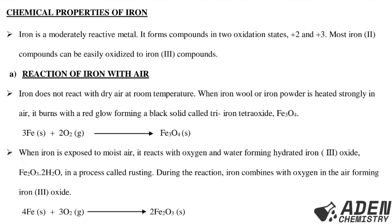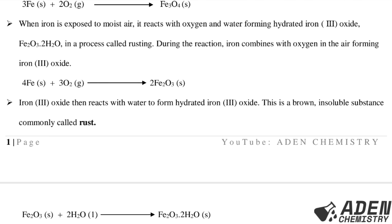When iron is exposed to moist air, it reacts with oxygen and water forming hydrated iron(III) oxide, Fe2O3·xH2O, in a process called rusting. Iron combines with oxygen forming iron(III) oxide: 4Fe(s) + 3O2(g) → 2Fe2O3(s). The iron(III) oxide then reacts with water to form hydrated iron(III) oxide. This is a brown insoluble substance commonly called rust — a brown coating that falls on the surface of iron metal. The equation is: Fe2O3(s) + 2H2O(l) → hydrated iron(III) oxide.